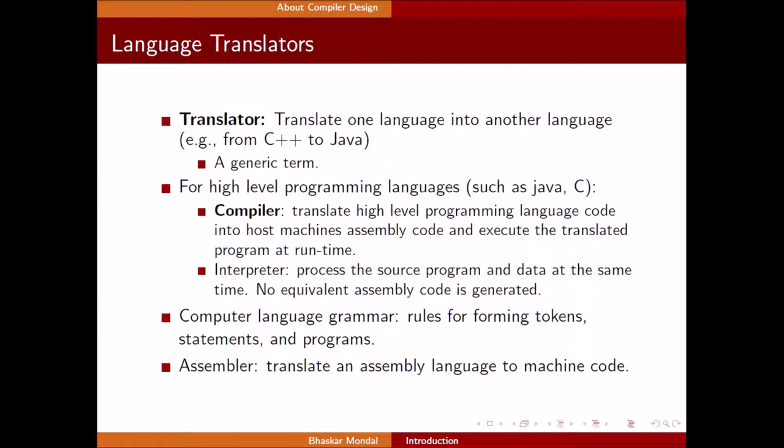Another kind of translator is called interpreter. It processes the source program and data at the same time. No equivalent assembly code is generated. Computer language grammar: rules for forming tokens, statements, and programs. Assemblers - there is another thing called assembler, which translates assembly language into machine code.